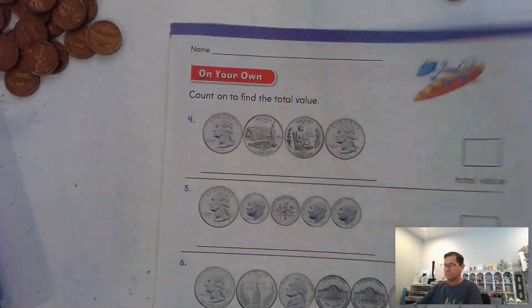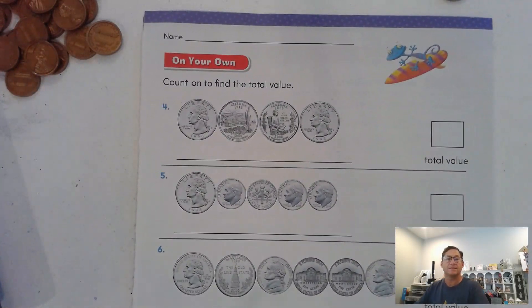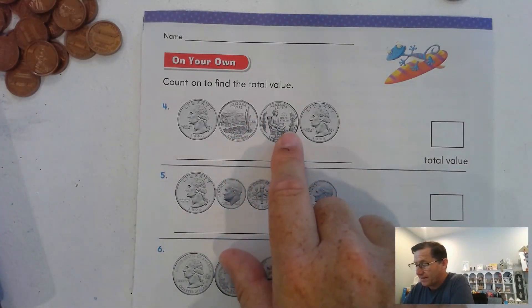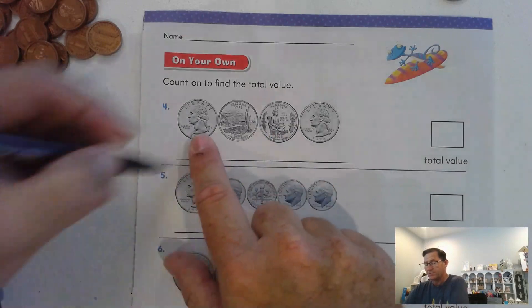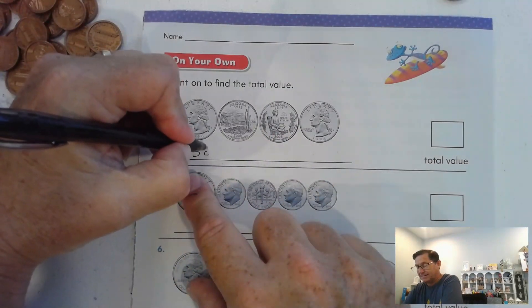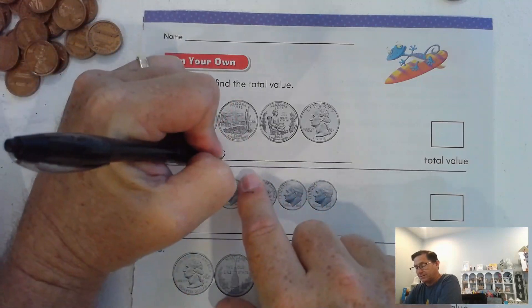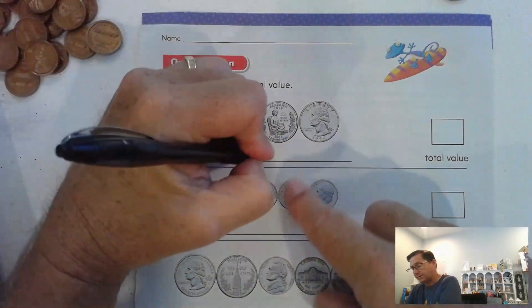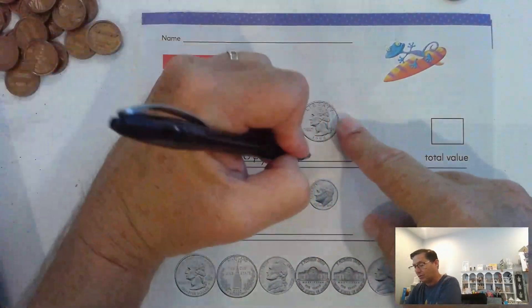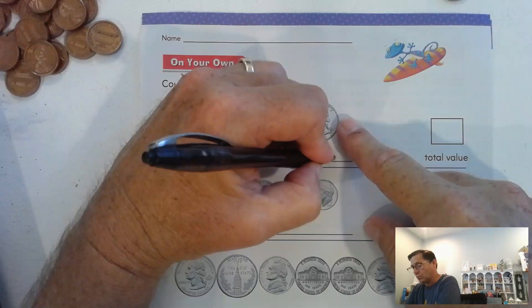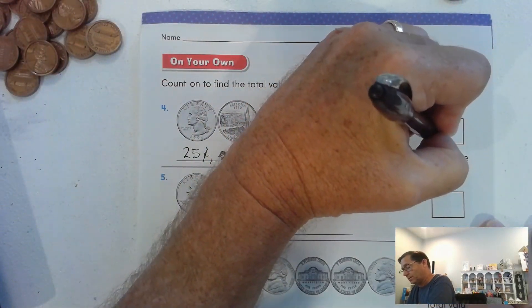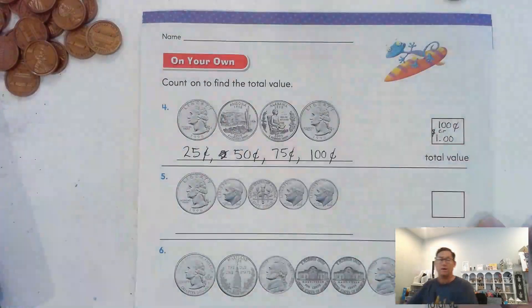All right, count on to find the total value. This is the back of the Arizona quarter, and this is the back of the Alabama quarter. We have 25 cents. Two quarters would give us 50 cents. Three quarters, 75 cents. Four quarters, 100 cents, or one dollar.